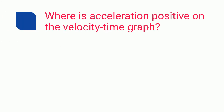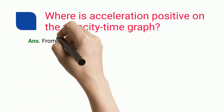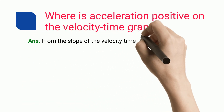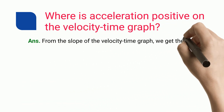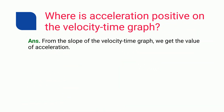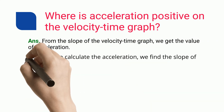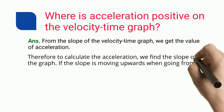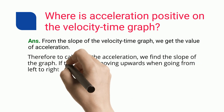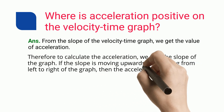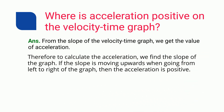Where is acceleration positive on the velocity-time graph? From the slope of the velocity-time graph we get the value of acceleration. To calculate the acceleration we find the slope of the graph. If the slope is moving upwards when going from left to right of the graph, then the acceleration is positive.